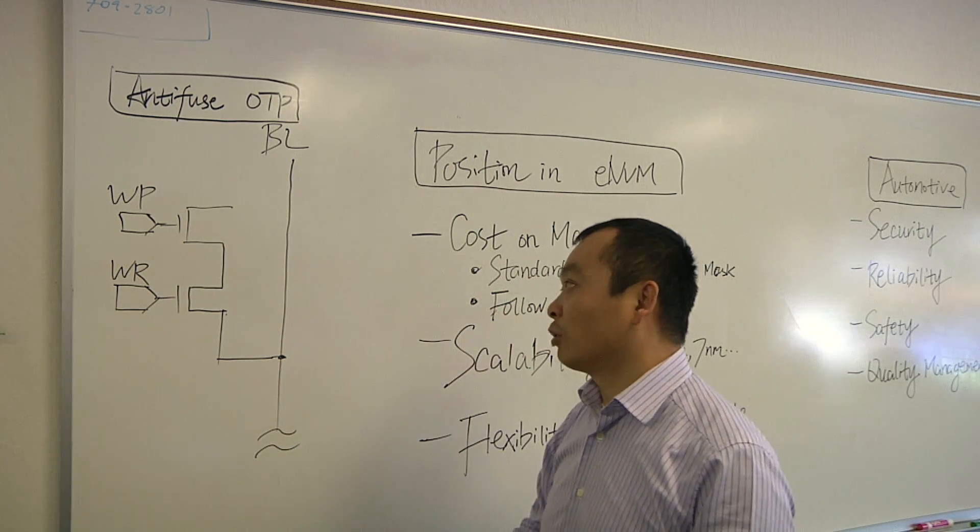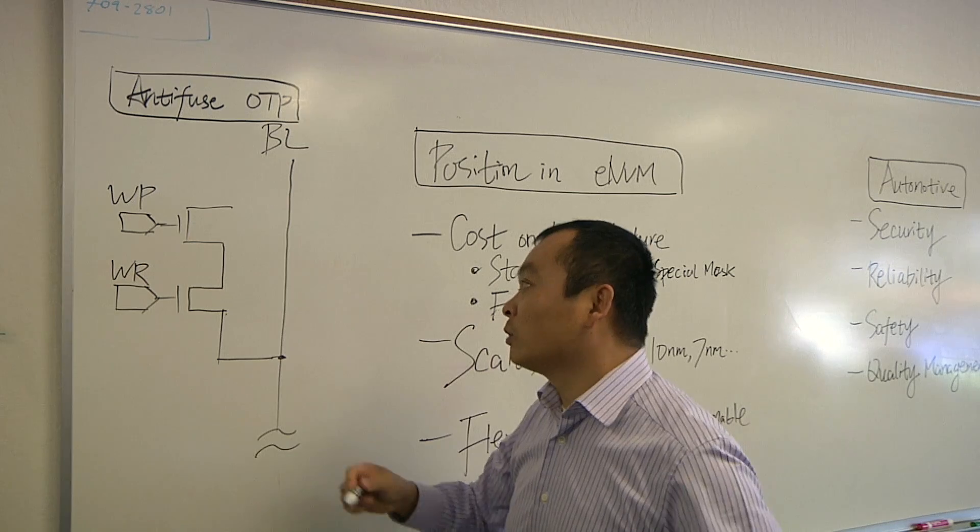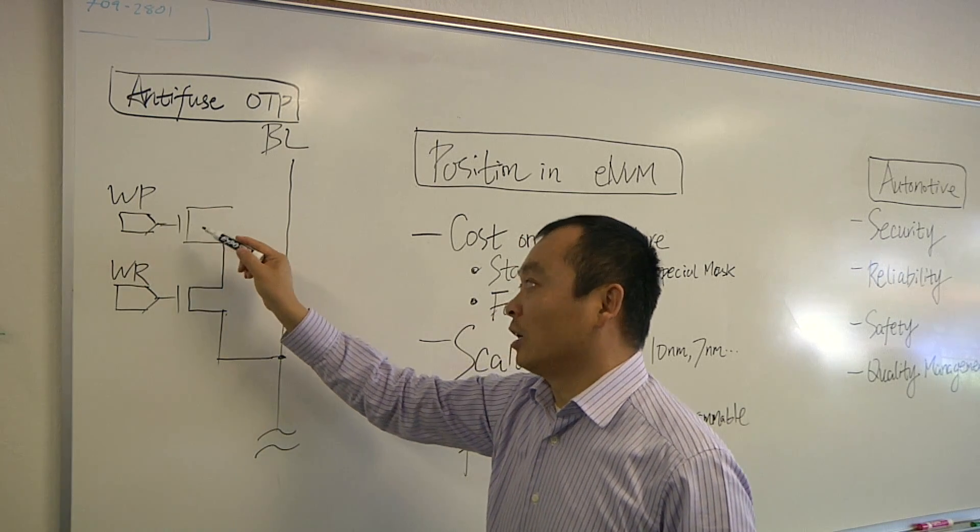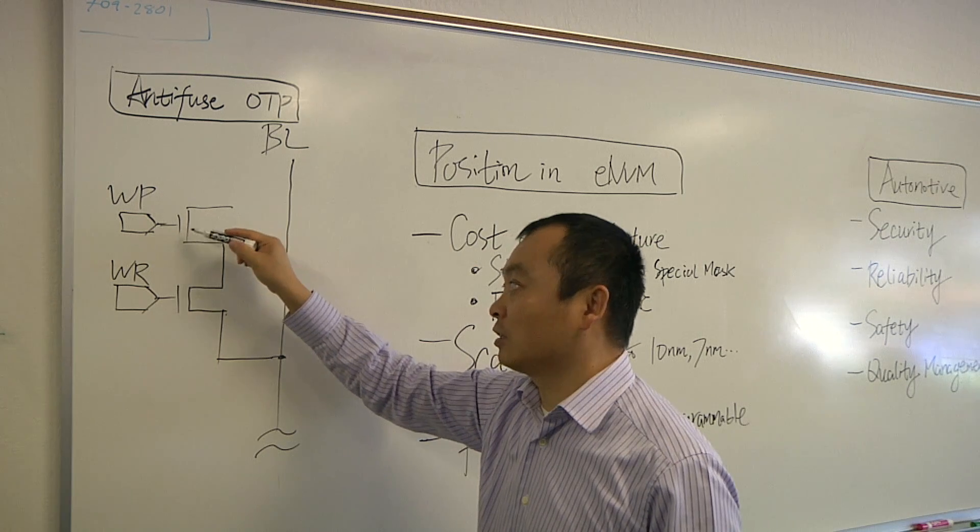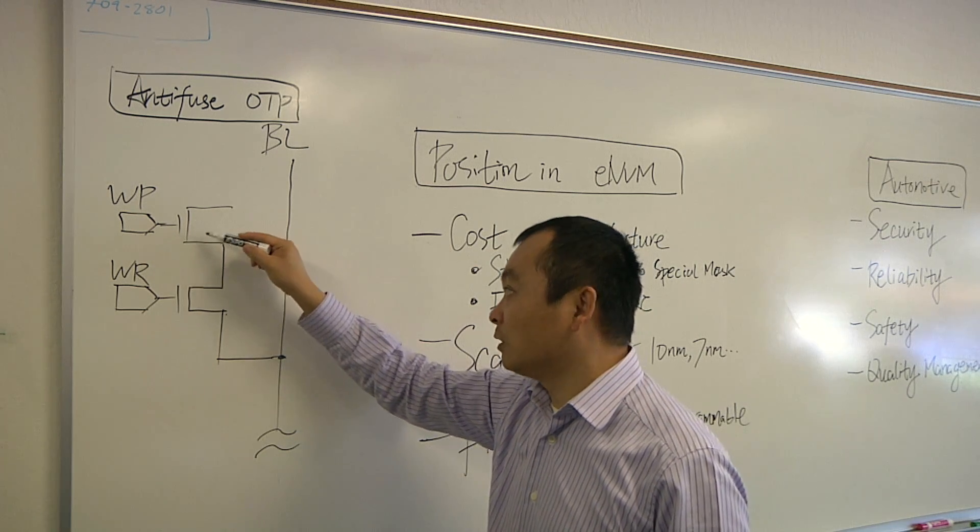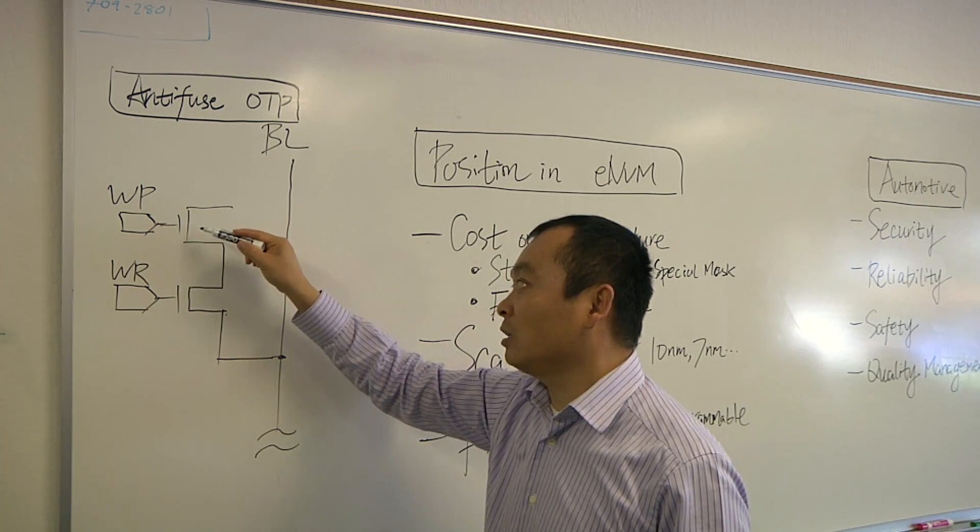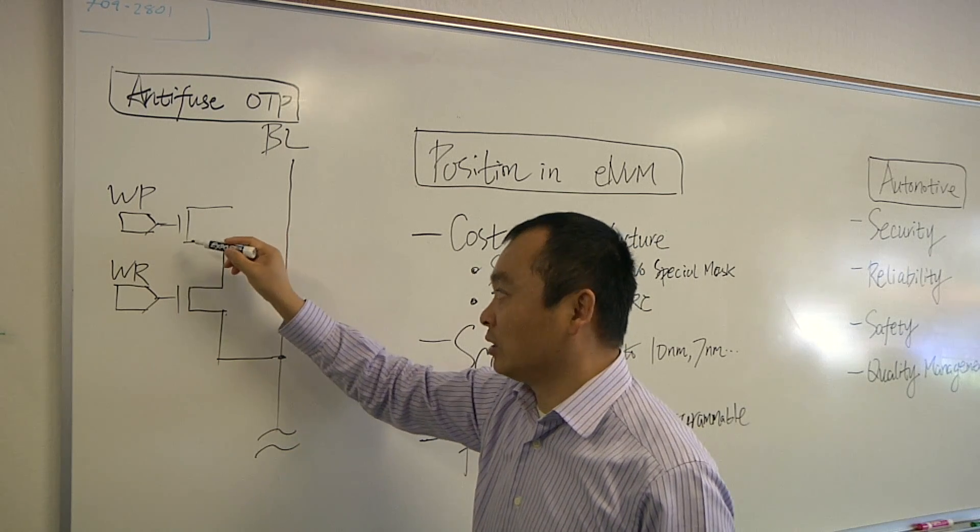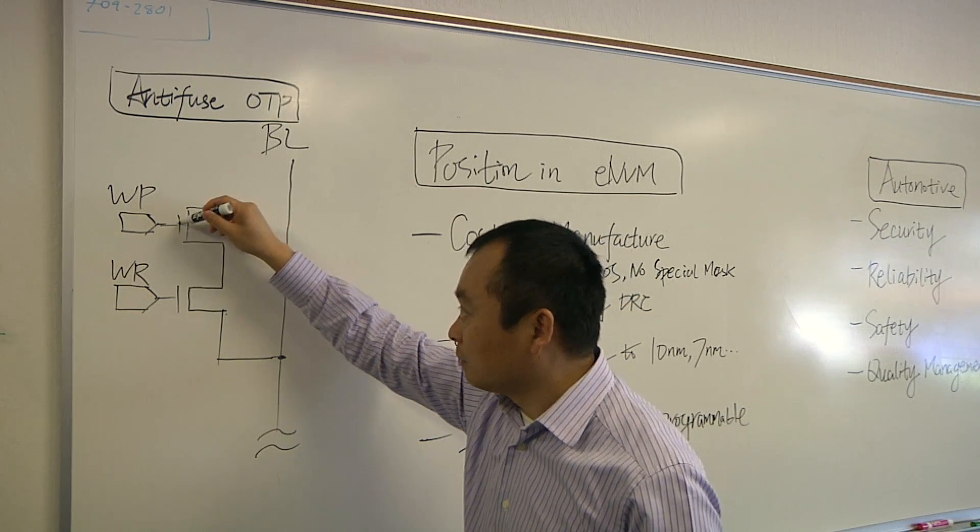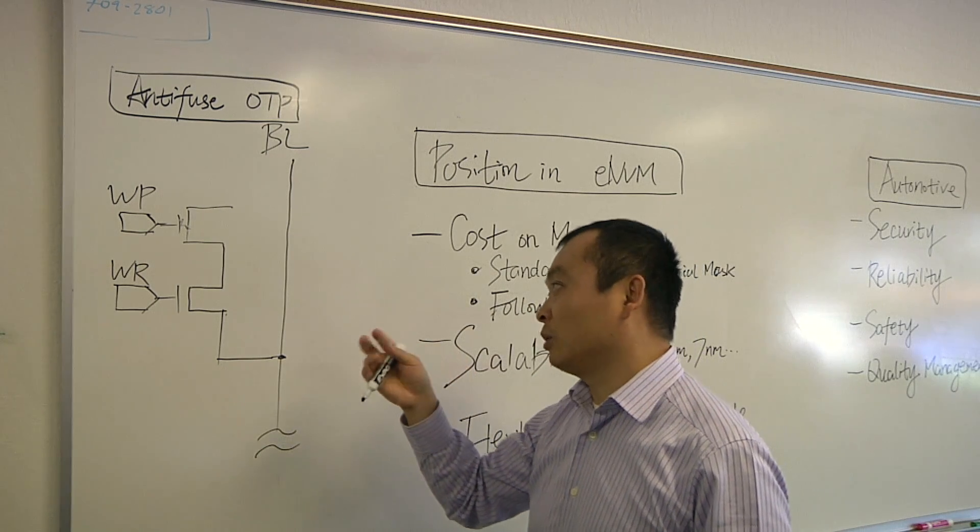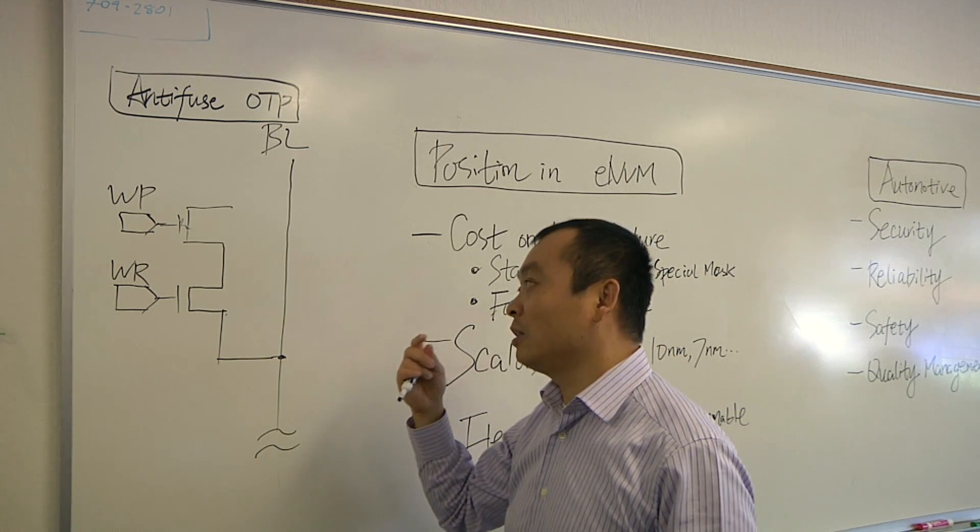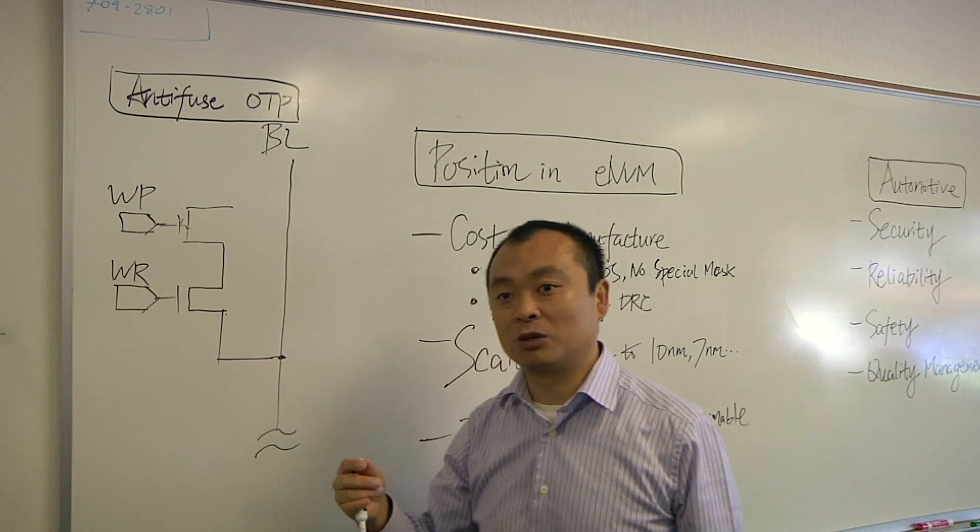And when the cell is programmed, we use a high voltage on the WP gate. And then that high voltage can break the gate oxide of this WP transistor. And after this oxide is broken, it is more like a resistor. So then the difference between the capacitor and the resistor in the circuit makes the difference for 0 and 1.